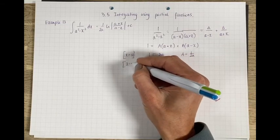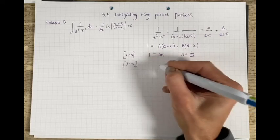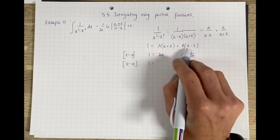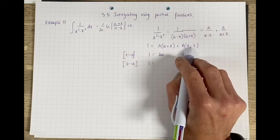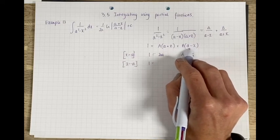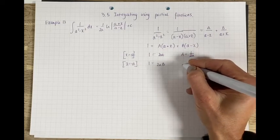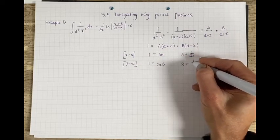Make x equals to minus a, and then you've got 1 equals - this will go to zero - and over here you have a minus minus a, so 2ab, giving me B is equal to 1 over 2a.